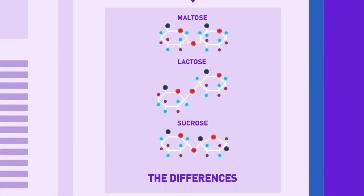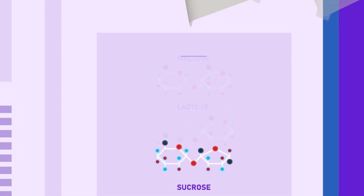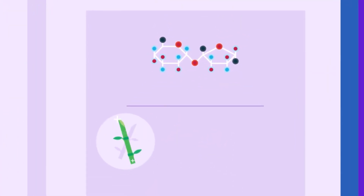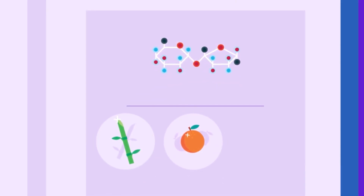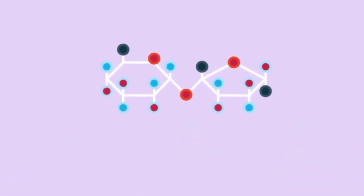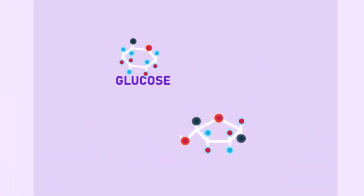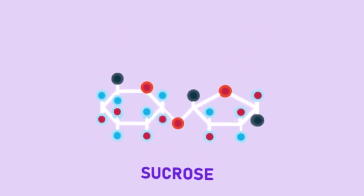The differences in the disaccharides are due to the different atomic arrangements within the molecule. Sucrose, or cane sugar, occurs in sugar cane stems, sweet fruits and certain storage roots, for example carrots. It consists of a glucose and a fructose molecule combined together.